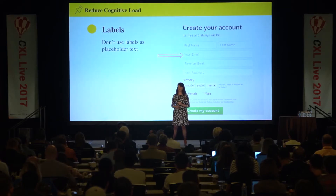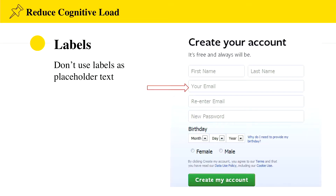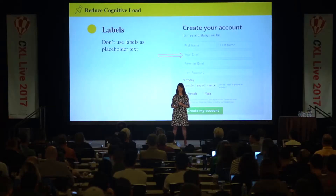Don't use labels as placeholder text, for three reasons. One, people don't remember — once you click in, your instructions go away, and then you have to click out again, making people think harder than they need to. Two, when users get to the form and scan it, they're going to think it's already filled out. And three, text fields that do not have any words in them actually draw more attention than those that do. This is according to an eye-tracking study from the Nielsen Norman Group. So don't use labels as placeholder text.